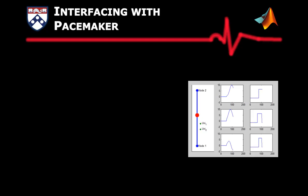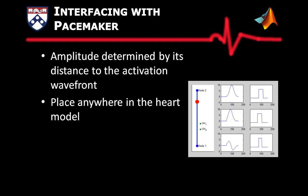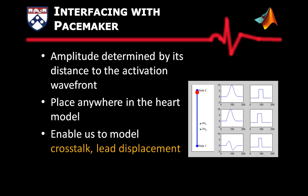When the activation wavefront moves from node 1 to node 2, the probe will sense the electrical activities. The amplitude of the signal is determined by the distance to the activation wavefront. These probe models can be placed anywhere within the heart which enable us to model pacemaker malfunctions like crosstalk and lead displacement.